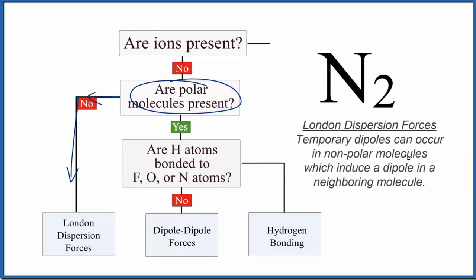London dispersion forces take place between nonpolar molecules, and it's really where we induce a dipole in a neighboring molecule, and that causes the attraction. It's pretty weak for nitrogen. Nitrogen is normally a gas, but if you cool it down enough, it will turn into a liquid.